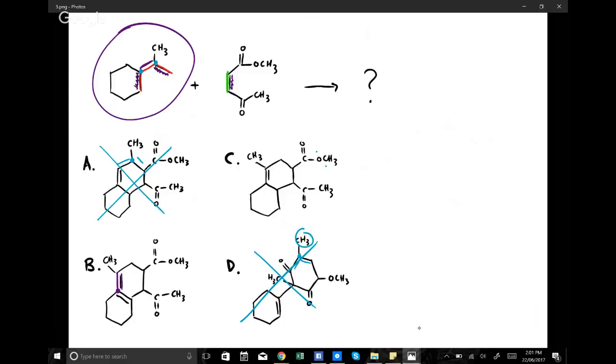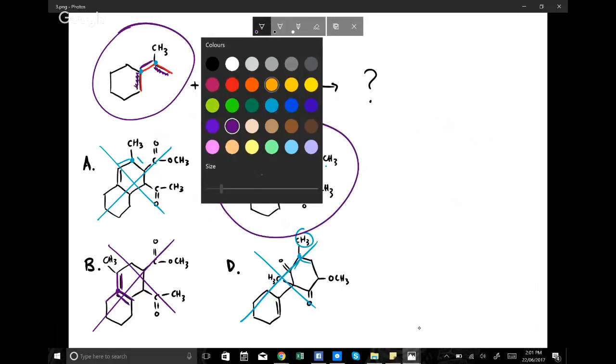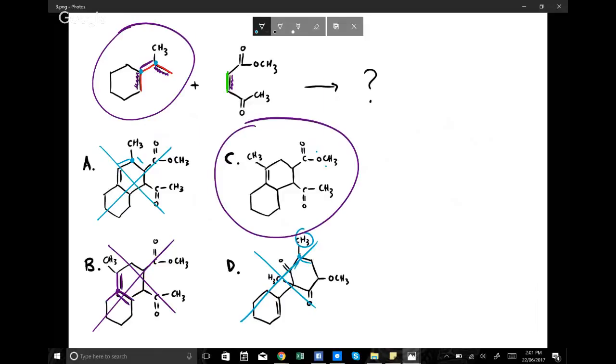Another reason why this is not a particularly good answer is the fact that this carbon actually has one, two, three, four, five bonds, and carbon should have a maximum of four. So we know that this is incorrect, and that leaves us with C, which is the answer.